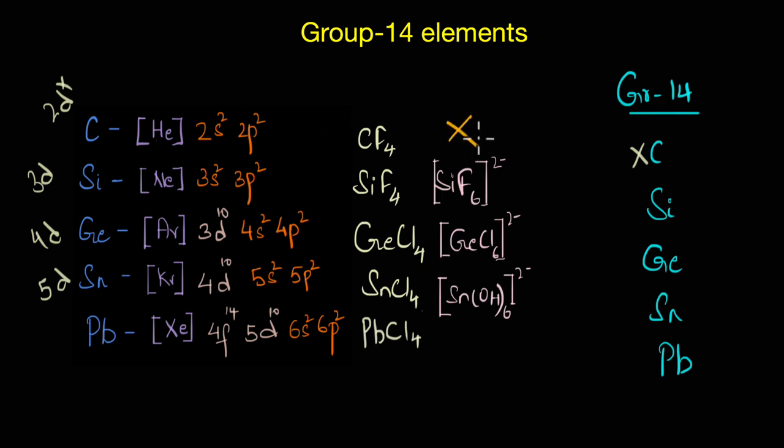Since carbon has no such d orbitals present, you cannot observe any such complex formation. And because of this, their halides are also able to undergo hydrolysis reaction where they react with water and accept the lone pair of electrons of the oxygen atom of water into their empty d orbitals.